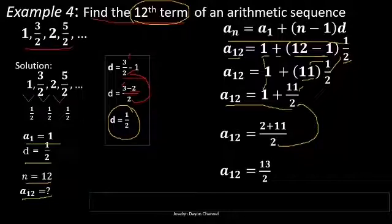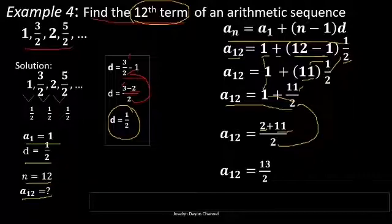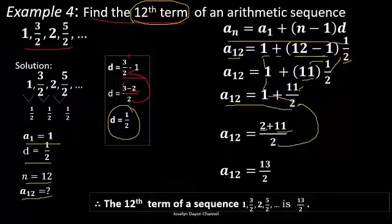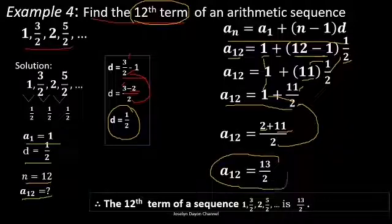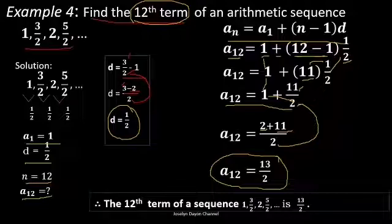Multiply 2 times 1, which equals 2, and copy 11. So 2 plus 11 equals 13 over 2. The 12th term is 13 over 2. Therefore, the 12th term of the sequence 1, 3 halves, 2, 5 over 2 is 13 over 2.